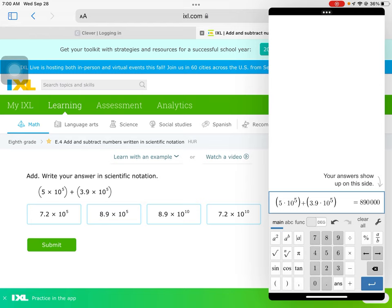8.9 times 10 to the fifth. I'm going to choose that answer and submit it to show you that it's correct. That's how you're going to work the IXL practice today. I'm going to